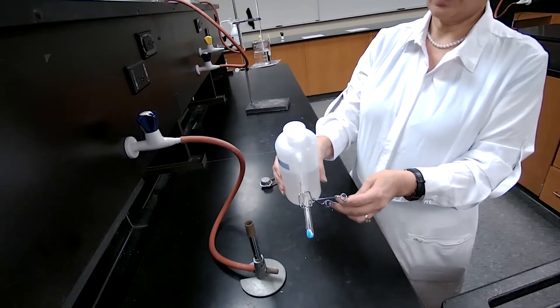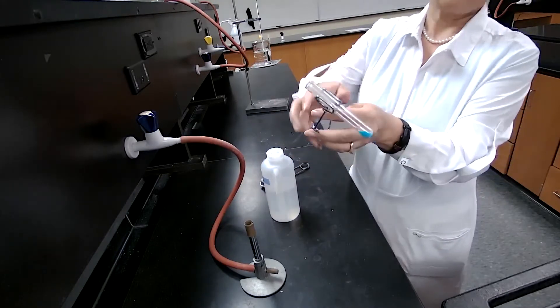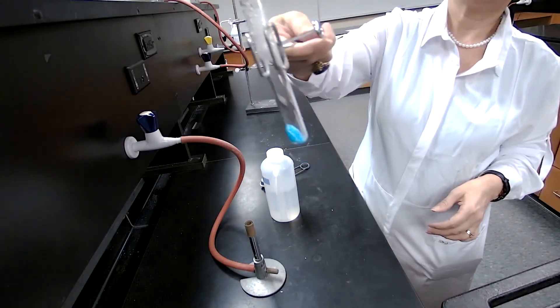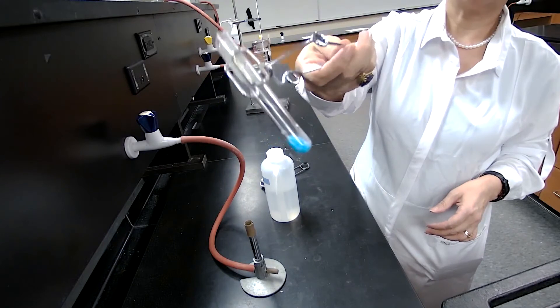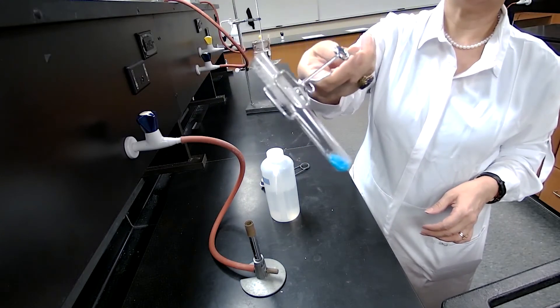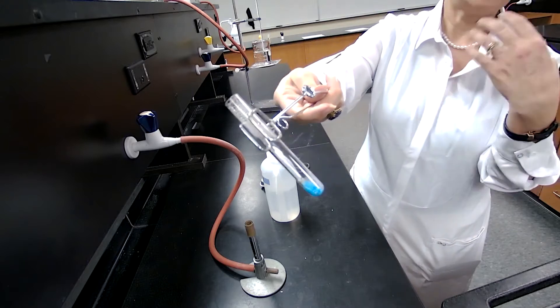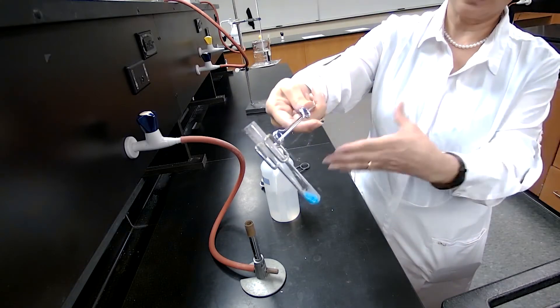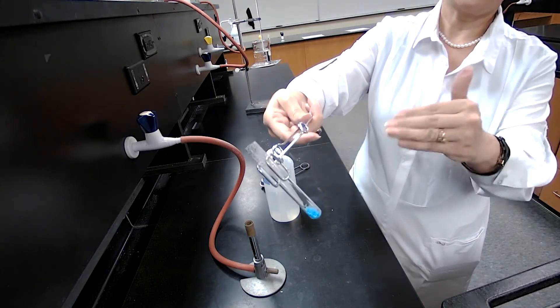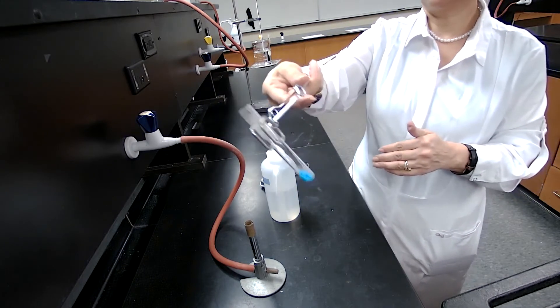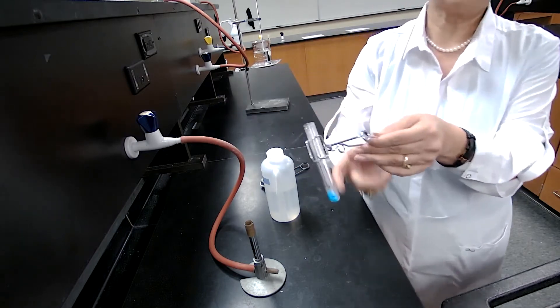So by adding water, a drop of water, the purpose of this experiment is for you to see that the blue color comes back. And this is a reversible process. The water of hydration left as a result of heating, it came back after I add water to anhydrous copper sulfate, which was the white color.